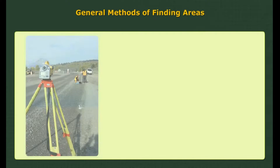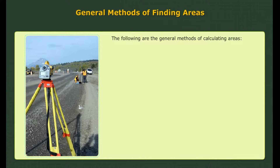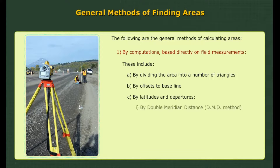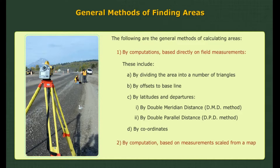The following are the general methods of calculating areas: 1. By computations based directly on field measurements — A. by dividing the area into a number of triangles, B. by offsets to baseline, C. by latitudes and departures (1. by double meridian distance, 2. by double parallel distance), D. by coordinates; 2. By computation based on measurements scaled from a map; 3. By mechanical method, usually by means of a planimeter.